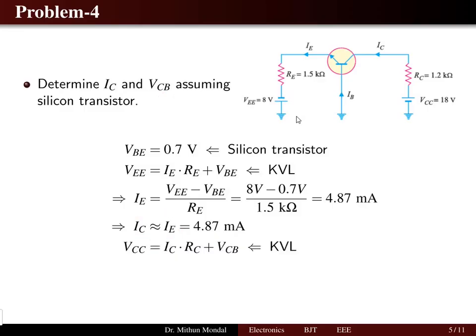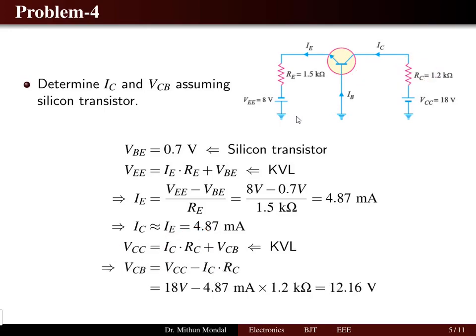Applying KVL in the output loop: the collector voltage equals IC × RC (the drop across the collector resistor) plus the collector-to-base voltage drop. The collector voltage and collector current and resistances are given, so we can calculate the collector-to-base voltage, which equals 12.16 volts. We have determined the collector current as well as the collector-to-base voltage.